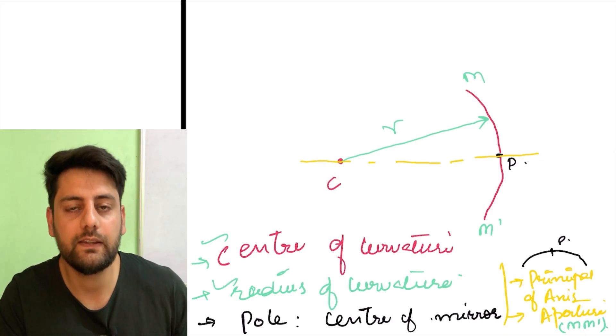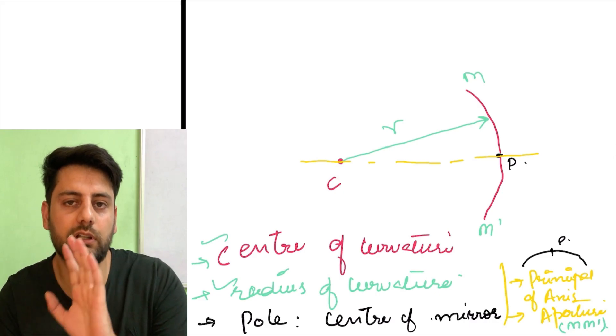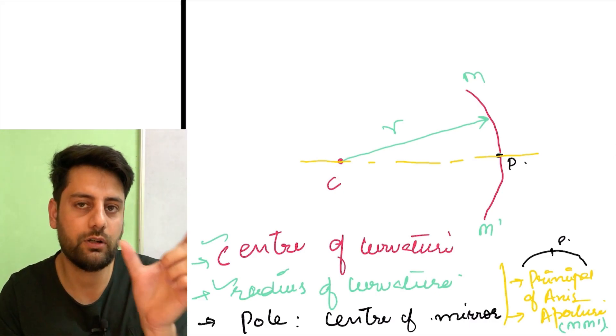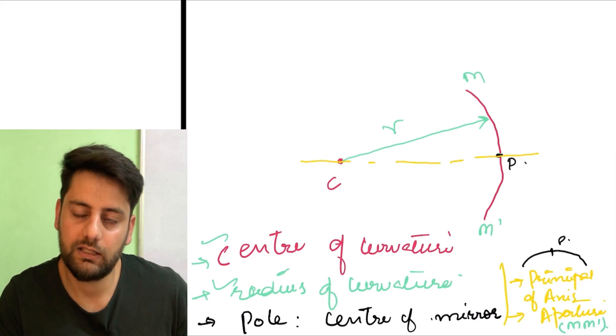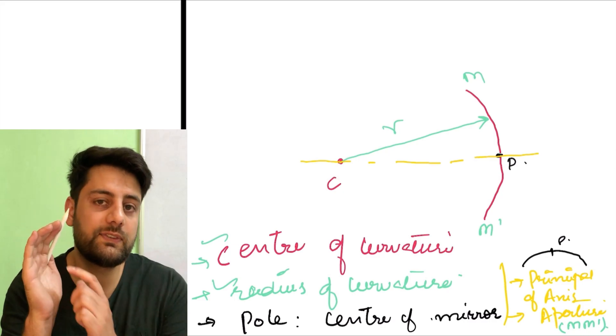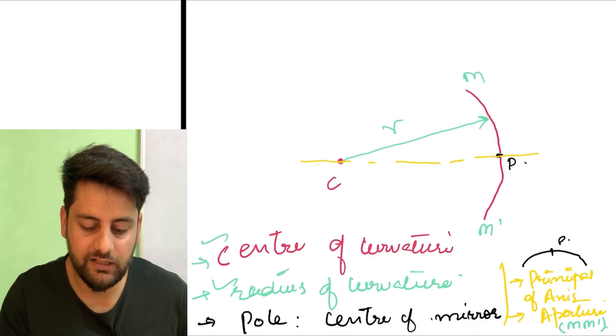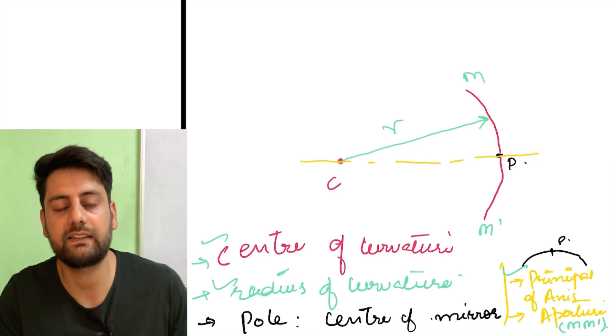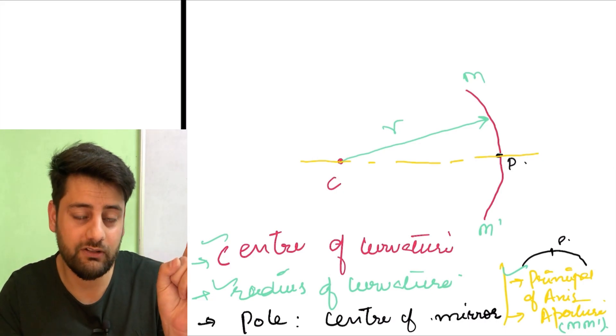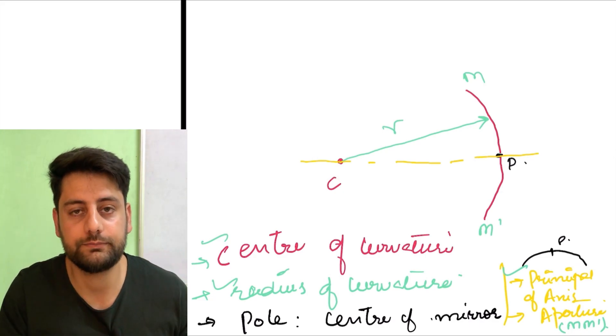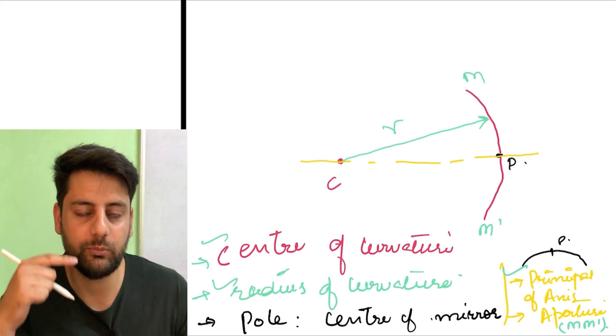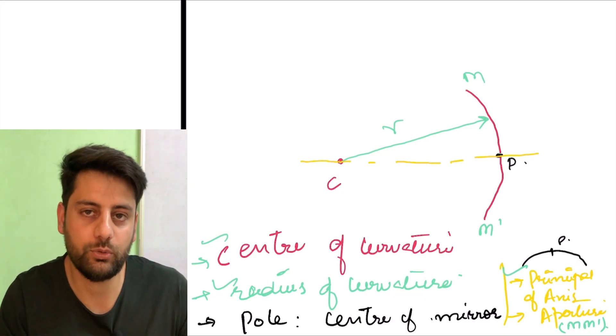Radius of curvature is nothing but the distance from center of curvature to the curvature. This mirror or center of curvature ke beech ki jo distance hai, that is known as radius of curvature. Another one is pole. Pole is basically the center of the mirror. Another one is principal axis. Principal axis is an imaginary line joh center of curvature aur pole ke through jaati hai. And last one is aperture. Aperture is nothing but the length of the mirror. I hope this is clear.